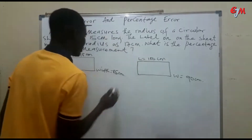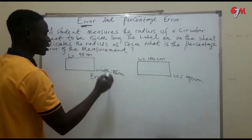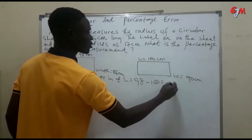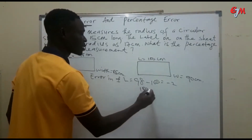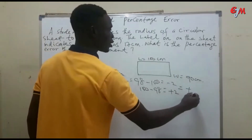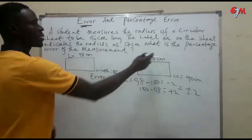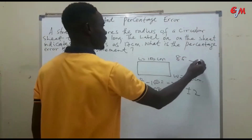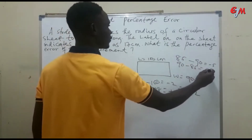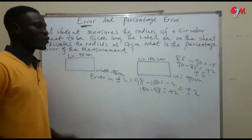So the error in the length is 98 minus 100, which gives us minus 2; or 100 minus 98, which gives us plus 2. That means the error is plus or minus 2. If you do the same for the width: 85 minus 90 gives minus 5, or 90 minus 85 gives plus 5 — so the error is plus or minus 5. That is how to get the error.